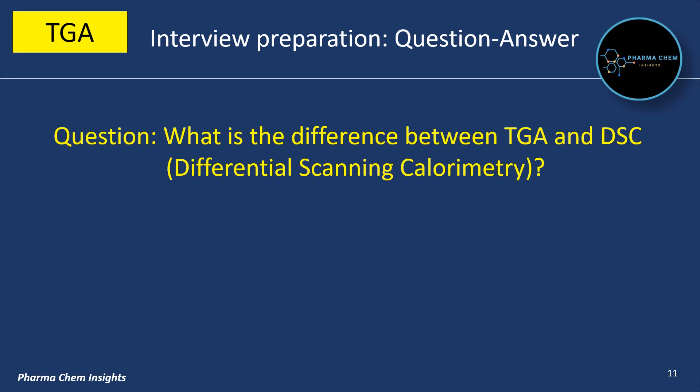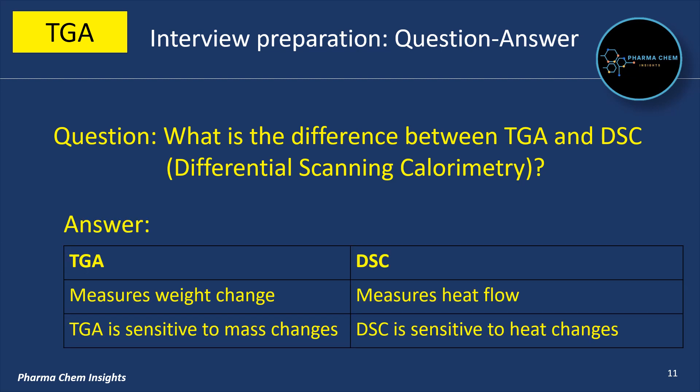What is the difference between TGA and DSC (differential scanning calorimetry)? TGA measures the weight change of the sample, while DSC measures heat flow. TGA is sensitive to mass changes, whereas DSC is sensitive to heat changes.